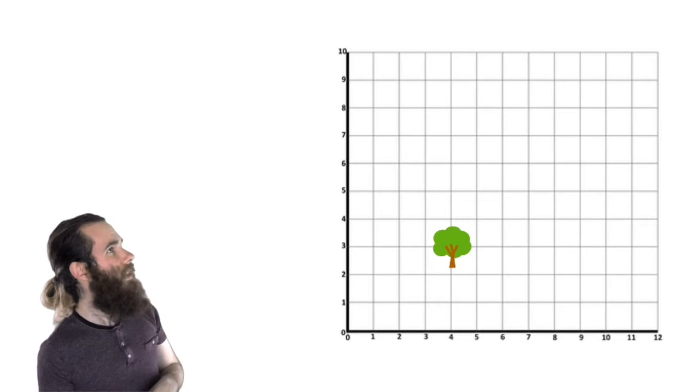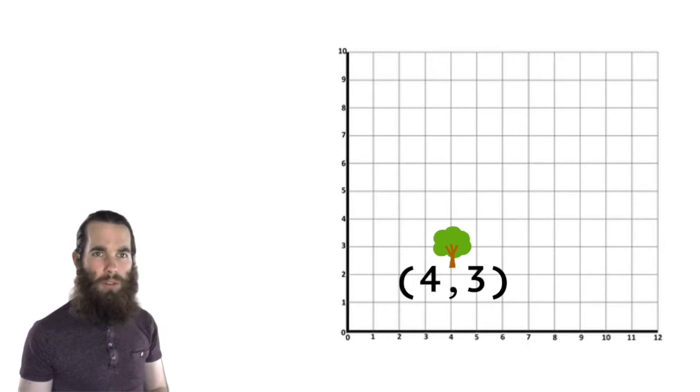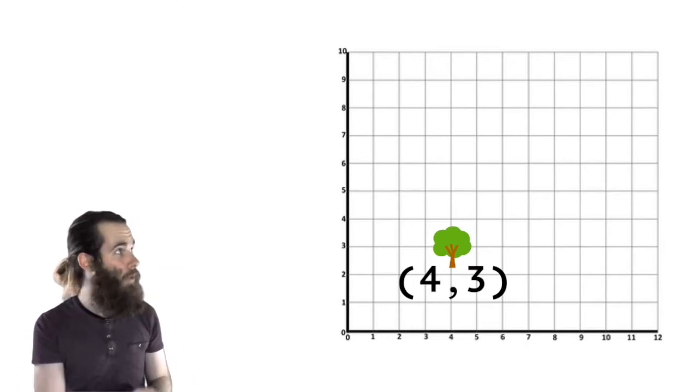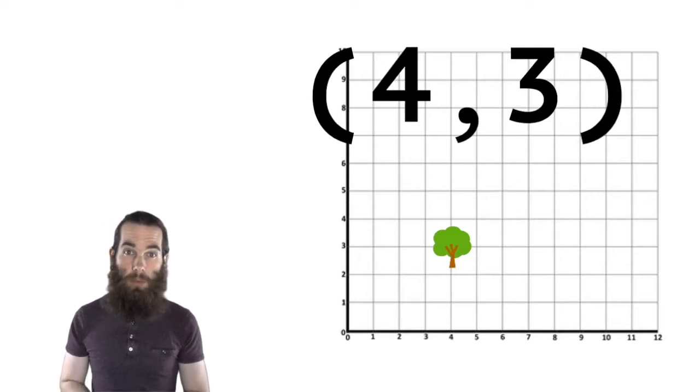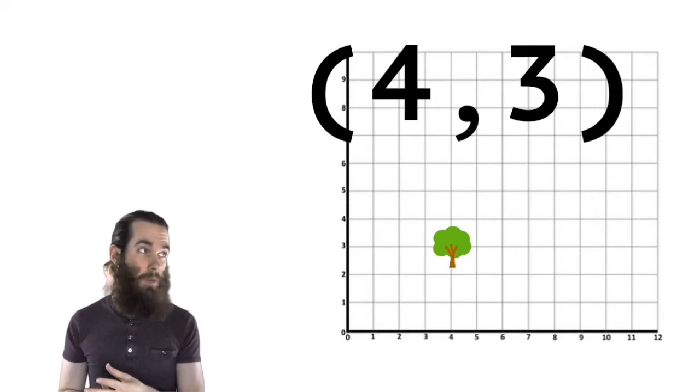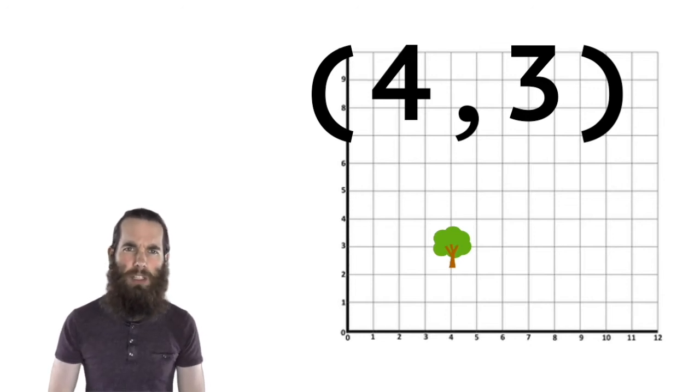Instead of saying, oh well that tree is to the right a bit and it's up a bit, I could say that tree is at 4, 3. And this is what grid coordinates will look like. You'll have in a bracket two numbers. Two if we're talking about a two-dimensional space, three if we're talking about three dimensions. But we're only going to worry about two dimensions now.